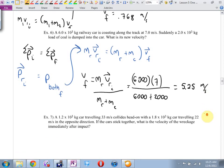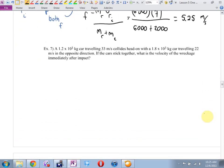Car crashes. Example 7. A car traveling 33 meters per second collides head on with a car traveling 22 meters per second in the opposite direction. If the cars stick together, what's the velocity of the wreckage immediately after impact? Is there a collision here, Mitchell?